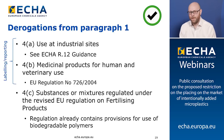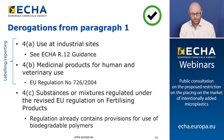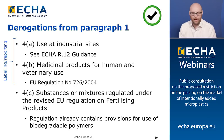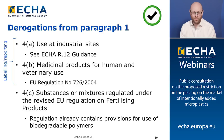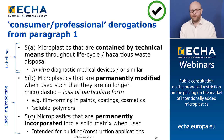Further derogations from paragraph one include uses at industrial sites — we refer stakeholders to ECHA's R12 guidance for interpretation of what an industrial site is. Uses of medicinal products for human and veterinary use already regulated in the EU are derogated, but subject to labeling and reporting requirements. Also derogated are substances or mixtures regulated under the revised EU regulation on fertilizing products, since that regulation already contains provisions for biodegradable polymers, so no additional criteria are needed and no labeling or reporting is required.